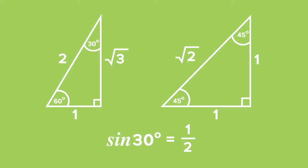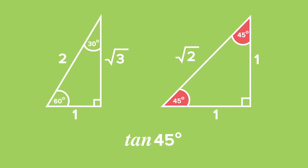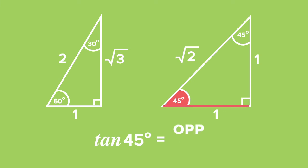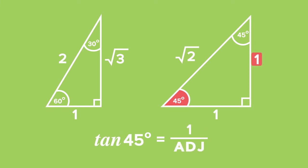In the same way, we can work out all the different trigonometric ratios using the 30, 60, and 90 degree triangle, and also using the 45 degree triangle. Using 45 degrees, let us work out the value for tan of 45 degrees without using a calculator. We already know that tan will be equal to opposite over adjacent, and the ratio thereof is 1 over 1, which gives us 1.